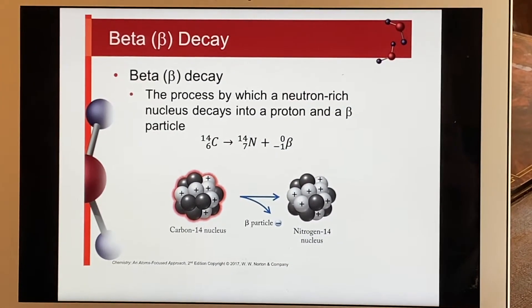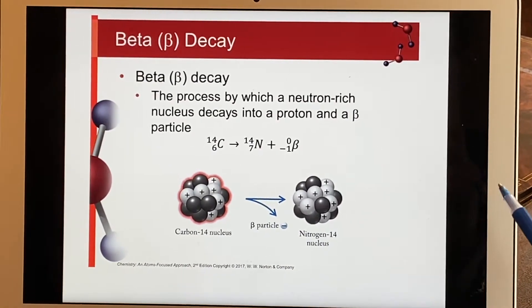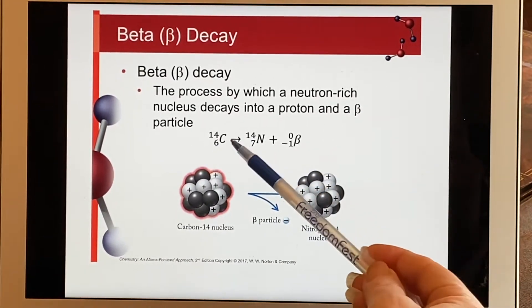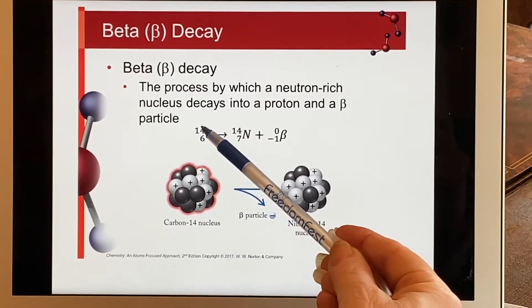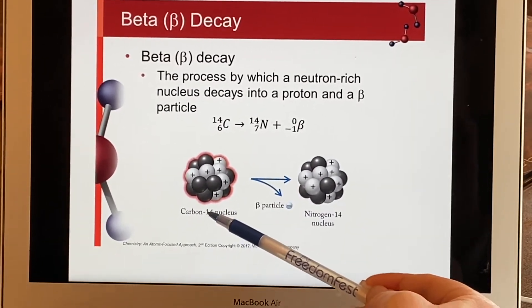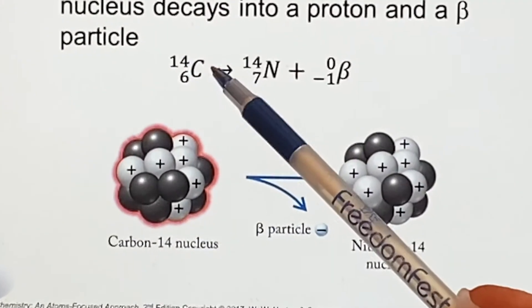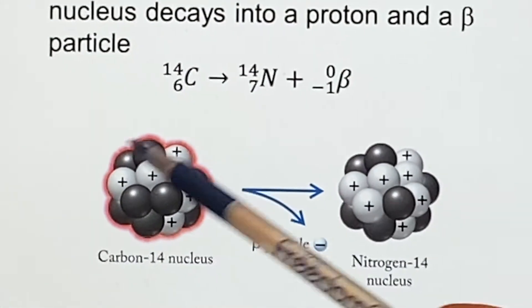Here's an example of beta decay, the same one we saw before but written in the opposite order. If we had Carbon-14, when I name it that way I'm telling you carbon—you can go look up that it's element six. The 14 tells you the total mass.